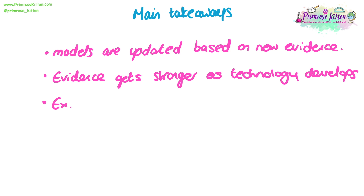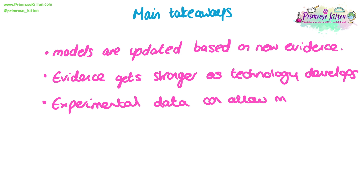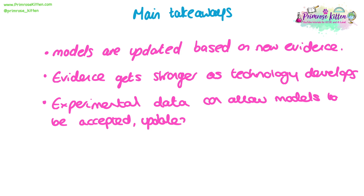Finally, experimental data is the most useful form of data for updating our models. We can make predictions beforehand based on the previous model and how we think it should behave in a given experiment. We can then accept, update, or reject the model based on that experiment's outcome and our prediction. This is still the same method we use now in developing scientific models and theories.